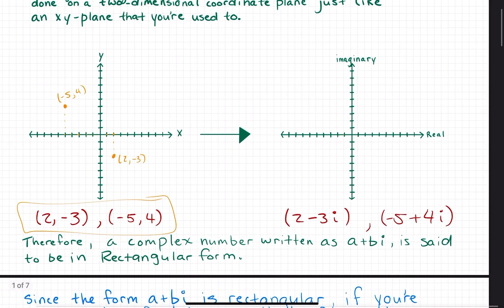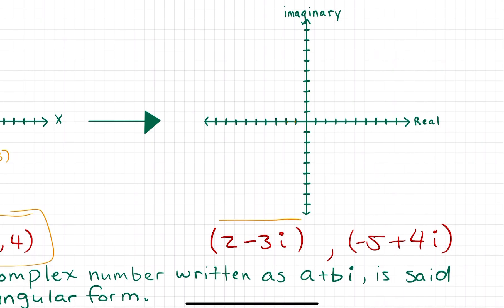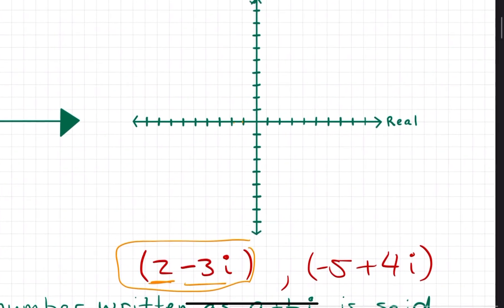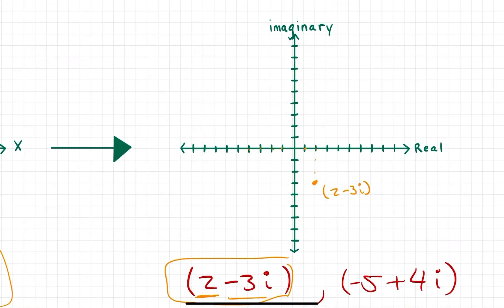It's super easy to graph rectangular coordinates on a normal x-y grid, and it's just as easy to graph rectangular form for a complex number on a two-dimensional imaginary-real grid. This is a complex number with its real portion 2 and its imaginary portion -3i. We're going to take the magnitude of the real portion, which is positive 2, and the magnitude of the imaginary portion, which is -3, and plot it just like those were the coordinates. So 2 - 3i takes us over 2, down 3, representing the complex number 2 - 3i. Same thing with -5 + 4i: go 5 in the negative real direction, 4 in the positive imaginary direction, representing -5 + 4i.